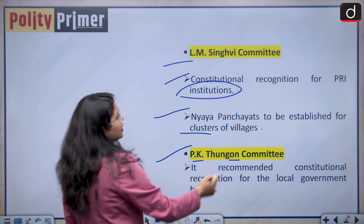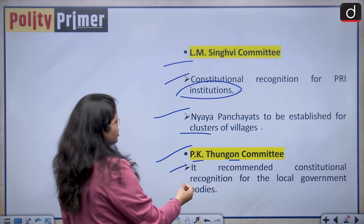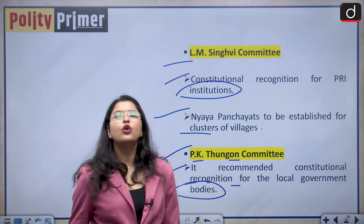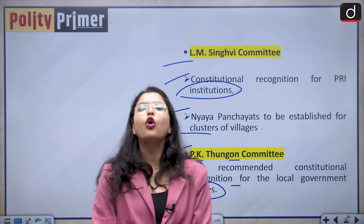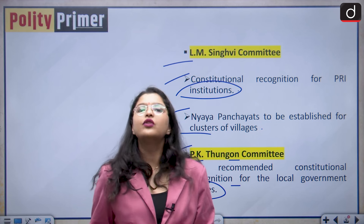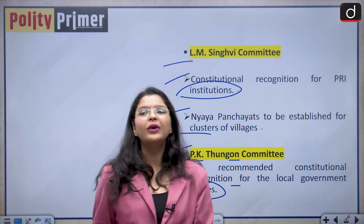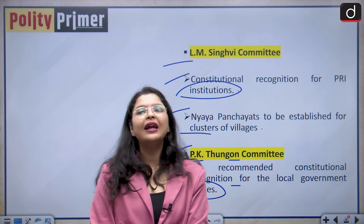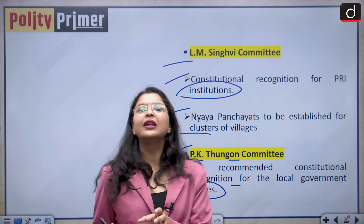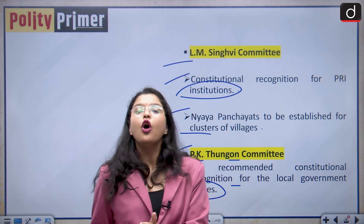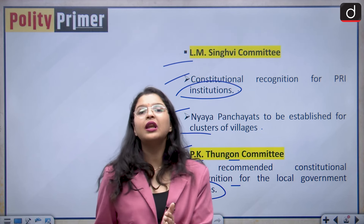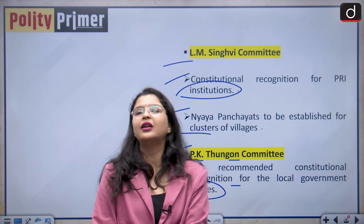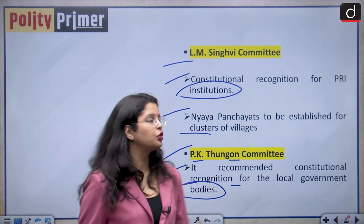Then the PK Thangan committee recommended constitutional recognition for the local government bodies. The conclusion from all of these commissions constituted by the Indian government is that a three-tier government in India should be created by bringing a constitutional change — by having a constitutional amendment by exercising the power given to Parliament under Article 368 of our Indian constitution.